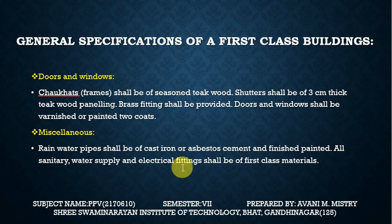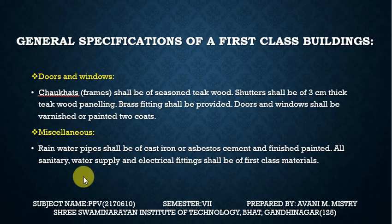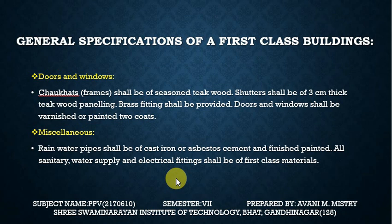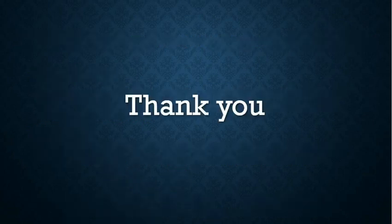Doors and windows: Panelling with brass fittings shall be provided; doors and windows shall be varnished or painted. Miscellaneous: Rainwater pipes shall be of cast iron or asbestos cement and finished painted; all sanitary, water supply, and electrical fittings shall be of first-class materials. Thank you.